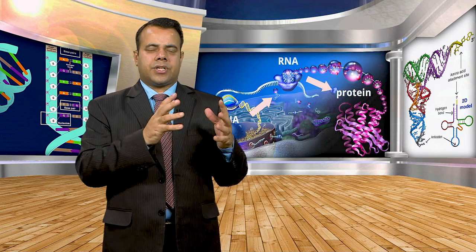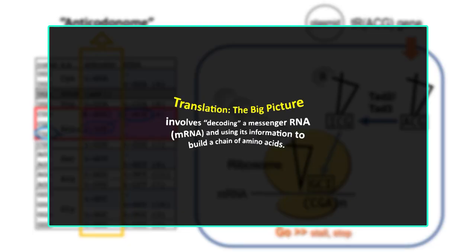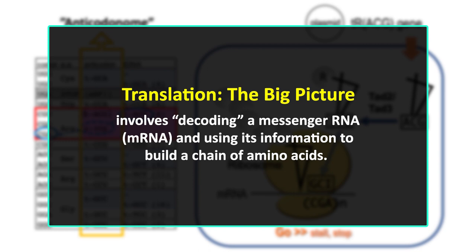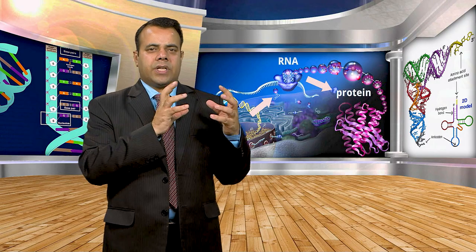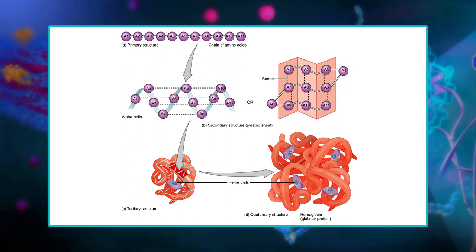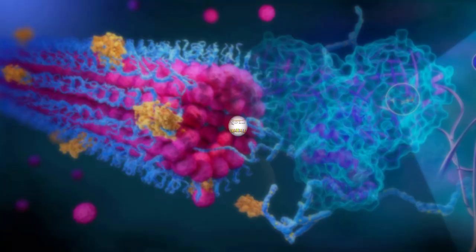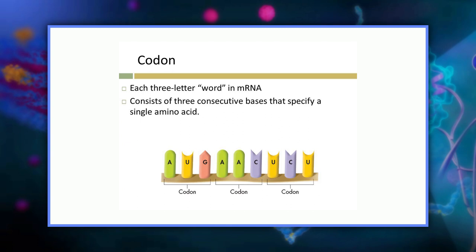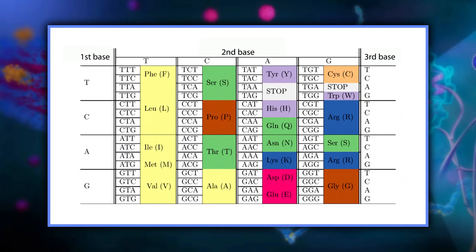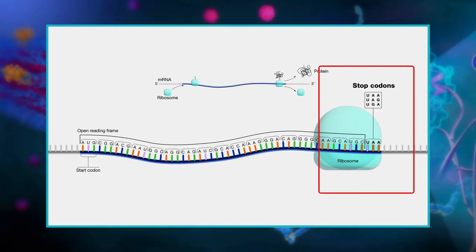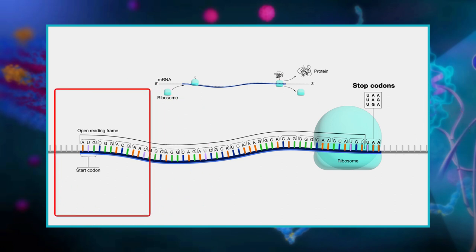Let's take a closer look at how translation happens from the first step to the final product. Translation — the big picture — involves decoding a messenger RNA and using its information to build a chain of amino acids. For most purposes, a polypeptide is basically just a protein, with the technical difference being that some large proteins are made up of several polypeptide chains, giving rise to tertiary and quaternary structures. In an mRNA, the instructions for building a polypeptide come in groups of three nucleotides called codons.